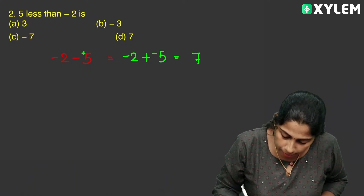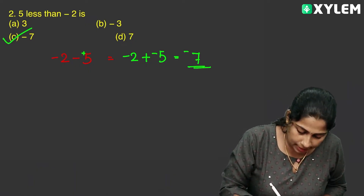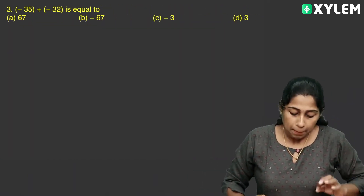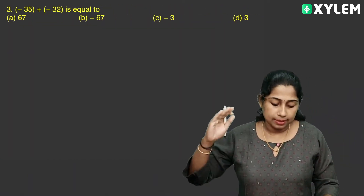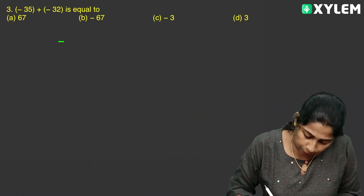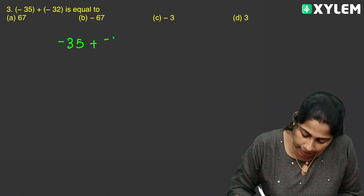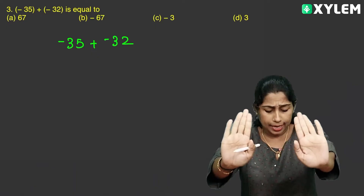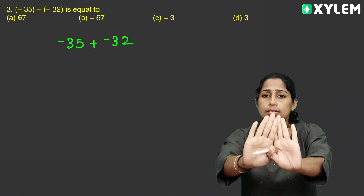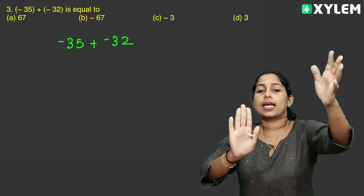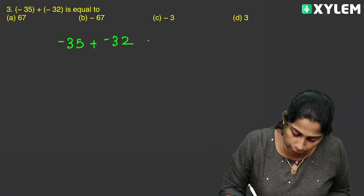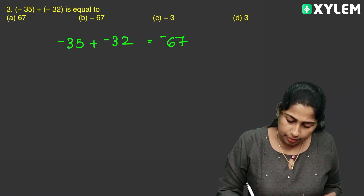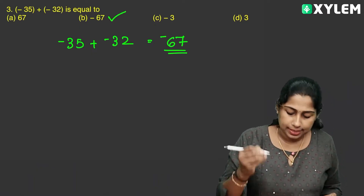So option C is the correct answer. Clear. Now the next question: minus 35 plus minus 32. We have two numbers with minus signs, so we use addition and give the minus sign. 5 plus 2 is 7, 3 plus 3 is 6. The sign is minus, so minus 67. Option B is the correct answer.